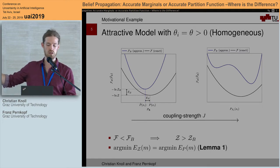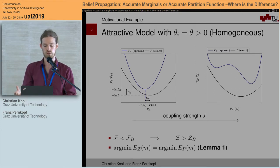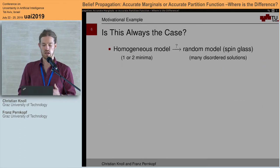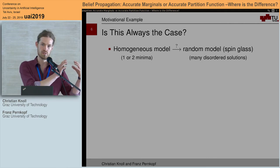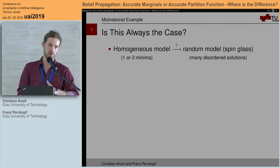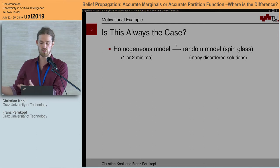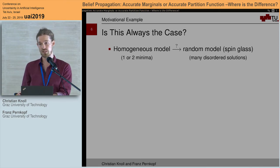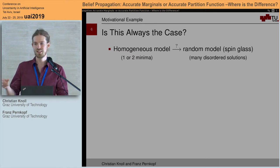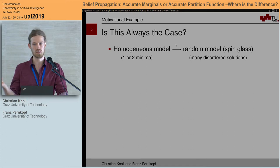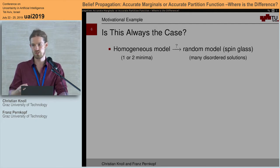For these very simple homogeneous models the global minimum also gives the best approximation to the marginals. However the question remains whether this is always the case. The problem is that we normally either use very simple homogeneous models that are well-behaved but not rich in properties, or random models known as spin glasses that have complex solution spaces but are hard to control and interpret. What we would like is a middle ground: models with more complex solution spaces that are still controllable.